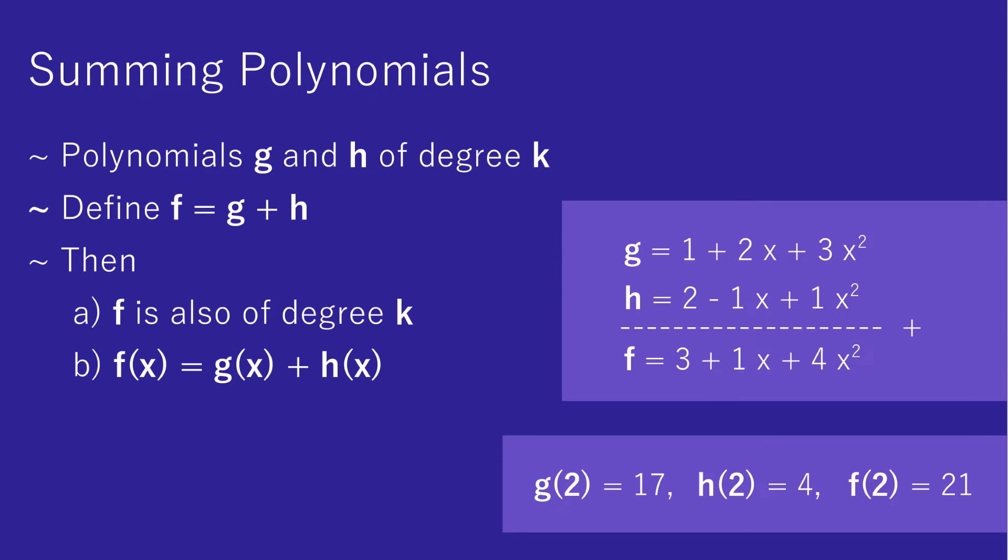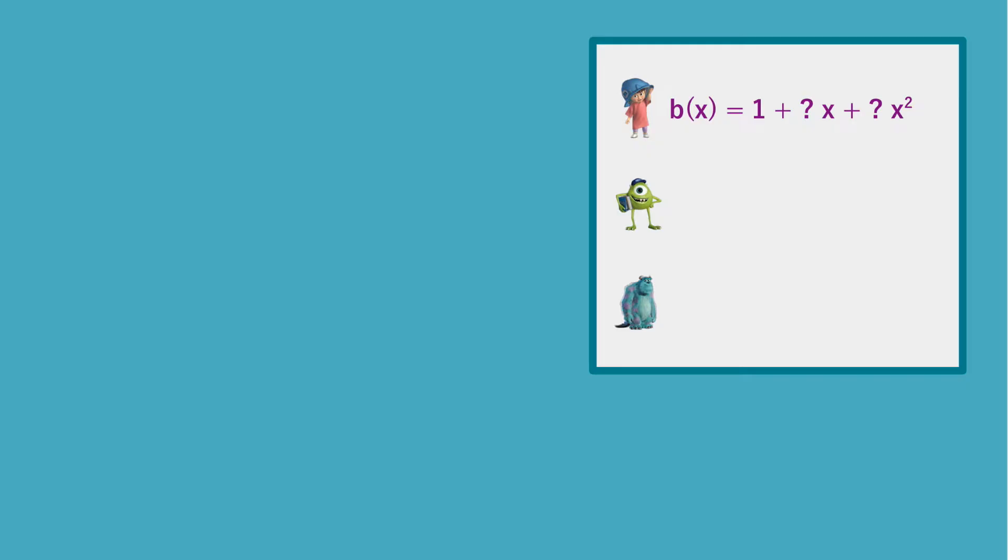Now, with that out of the way, how can we combine this with secret sharing to achieve our secure computation? We start by having each party encode their vote as a secret polynomial of degree 2. That is, 1 less than the number of parties. Since Boo voted 1, her polynomial will be of the shape 1 plus something times x plus something times x squared.